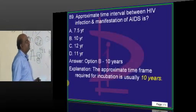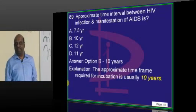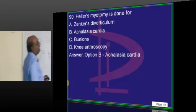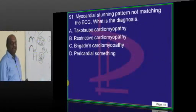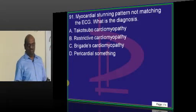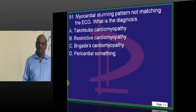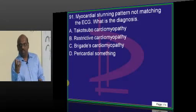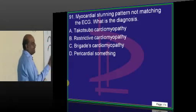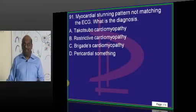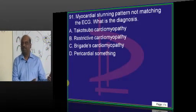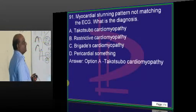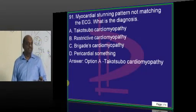Between HIV infection and manifestation, it takes about 10 years. Heller's myotomy is for achalasia cardia — easiest question. What is myocardial stunning? Whenever perfusion to the heart decreases, the heart gets stunned — the myocardium is not matching what you are seeing in ECG. There is a mismatch between ECG findings and myocardial perfusion study findings.